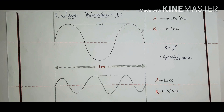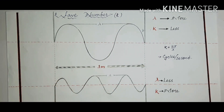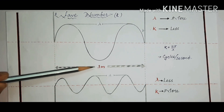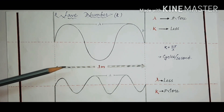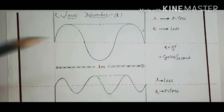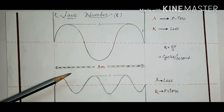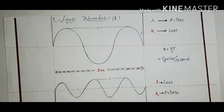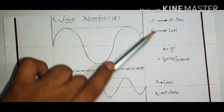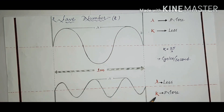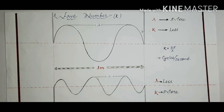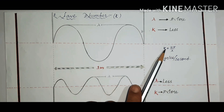The next quantity is wave number, indicated by k. Wave number gives an idea about the number of cycles present in a given unit distance. For a wave with larger wavelength, fewer cycles are present in one meter, while for a wave with smaller wavelength, more cycles are present. So lambda is more but k is less for one wave, and lambda is less but k is more for the other. Wave number is related to wavelength by k equals 2π divided by lambda, meaning they are inversely proportional.